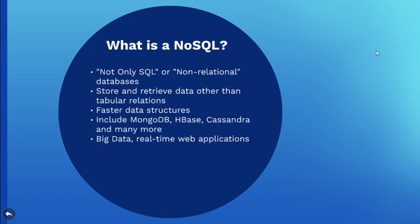Many online applications today have database requirements that exceed the capabilities of relational databases. Their data structures are usually faster than relational database structures. NoSQL databases include MongoDB, HBase, Cassandra and many more. They are increasingly being used in big data and real-time web applications.